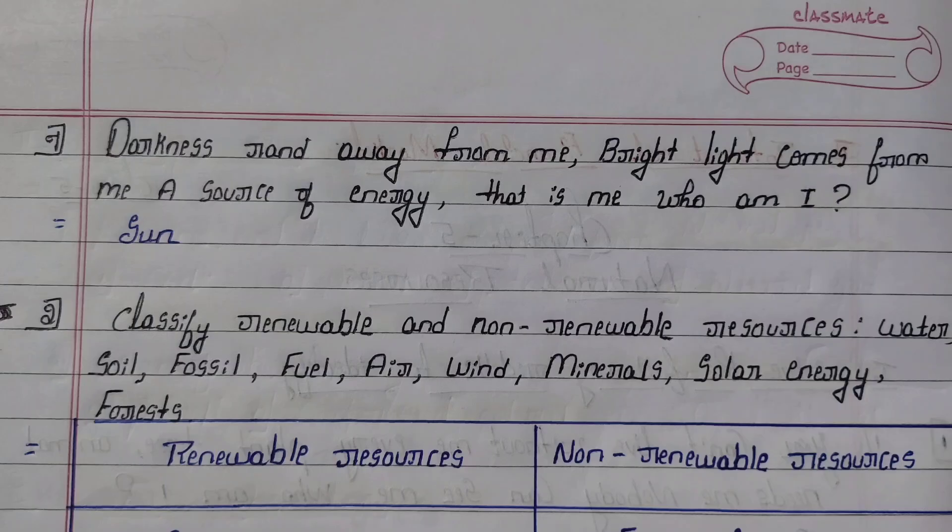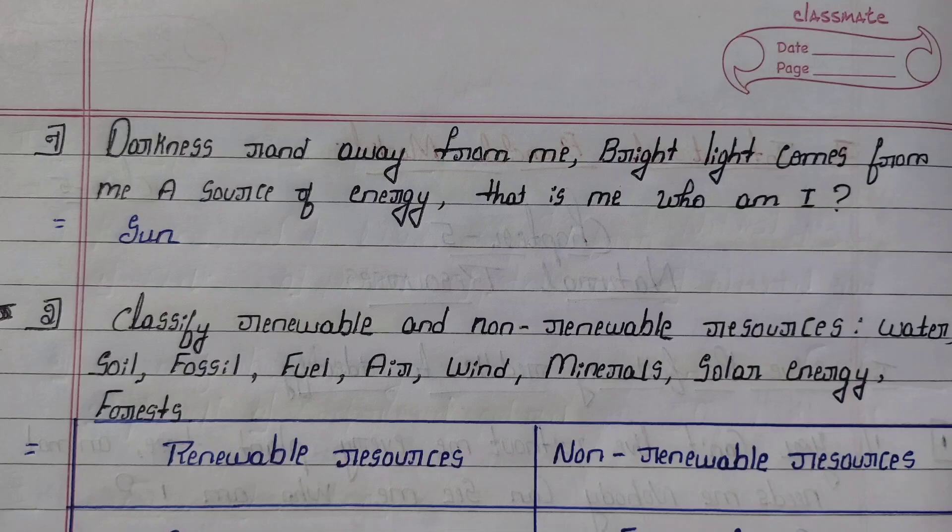Seventh and eighth questions: Name the minerals and solar energy and forests. Answer: Renewable resources are solar energy, air, wind, water, and soil. Non-renewable resources are fossil fuels and minerals.